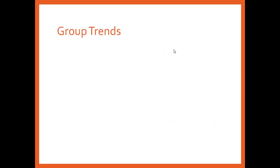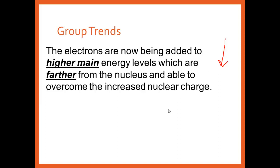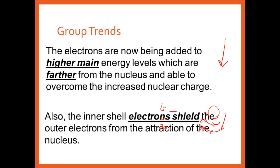As you go down a group — group trends — what happens as I go down a group? These electrons are going into 1S, then 2S, then 3S. Each time you add a shell, we look at those outer electrons and they're being further and further away, so your size gets larger as you go down a group. Also, you get more shielding, and the more shielding, they're blocking these electrons from feeling the positive protons. So with more shielding, they don't feel that strong attraction, and you're going to see the atoms get bigger as you go down a group.